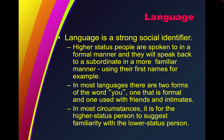Higher status people are spoken to in a formal manner, and they will speak back to a subordinate in a more familiar manner — using their first names, for example. She is Lady Chatterley and he is a commoner, so when speaking to her in public he must refer to her as Lady Chatterley, but when they're just together he calls her Chucky. In most languages, there are two forms of the word 'you' — one formal and one used with friends and intimates. He calls her 'thou' and 'thee' when he's happy with her, and 'you' when he's not.